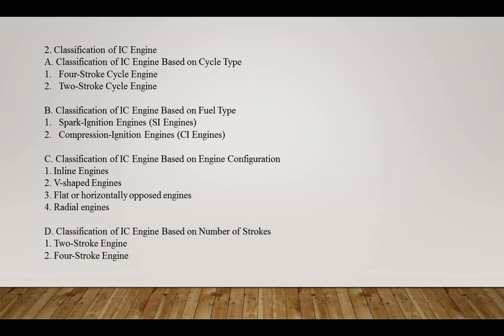In an inline engine, the cylinders are arranged in a straight line. This configuration is commonly used in small cars and motorcycles. In V-shaped engines, the cylinders are arranged in a V-shape, and these are generally used in larger cars and trucks. In flat or horizontally opposed engines, the cylinders are arranged in a horizontally opposed configuration with two banks of cylinders facing each other. This configuration is commonly used in aircraft and some high-performance sports cars. In radial engines, cylinders are arranged in a circular pattern around the crankshaft, and this configuration is used in aircraft.